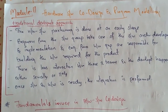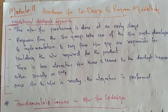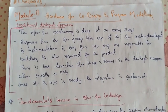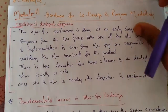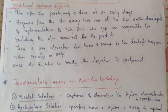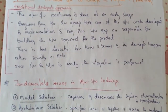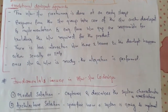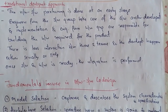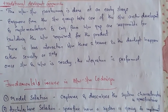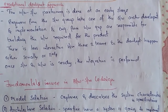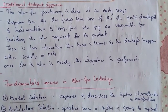Hello friends, we'll be continuing with embedded systems. Here we'll be learning about the hardware-software co-design and programming models. The hardware-software partitioning is done in early stages of the embedded system designing process. Developers from the software group take care of the software architecture development and implementation.